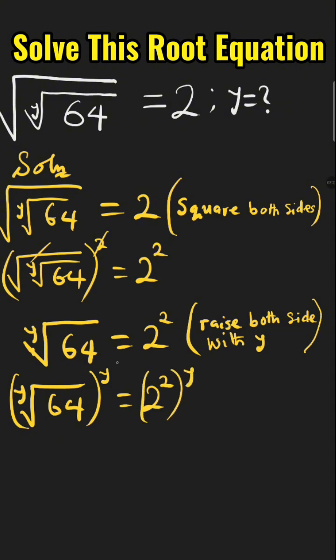Y, we cancel white root left with 64 equal to 2 raised to the power of 2y. We can multiply the power.